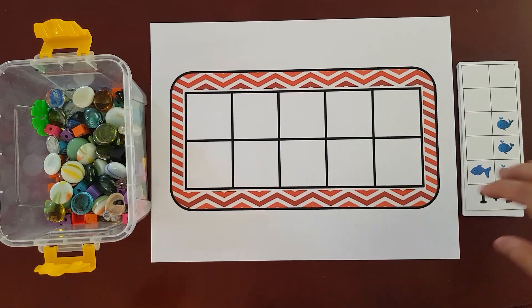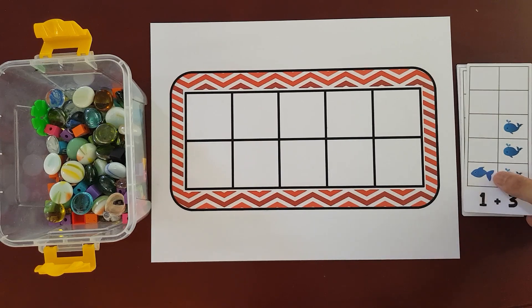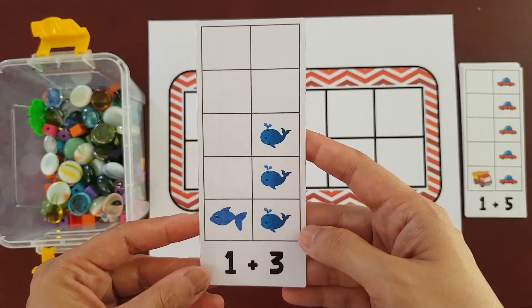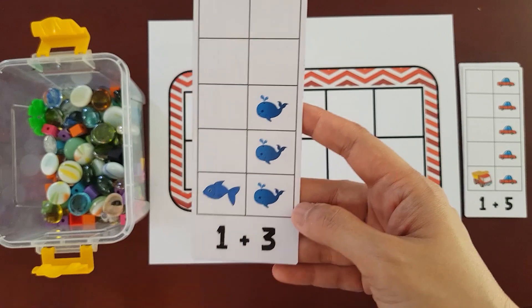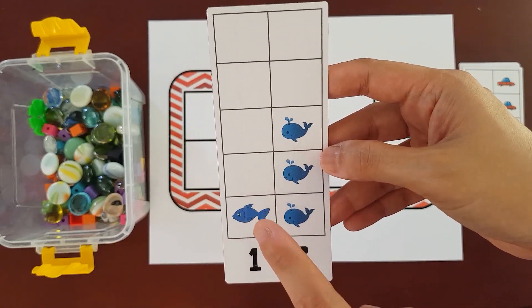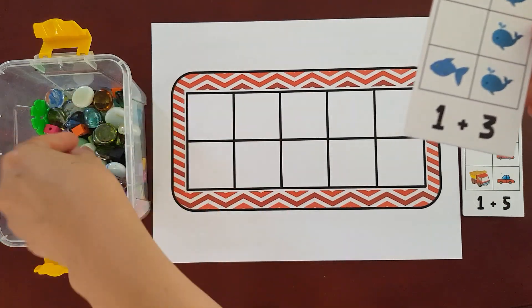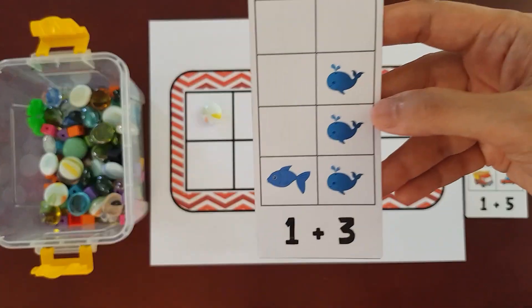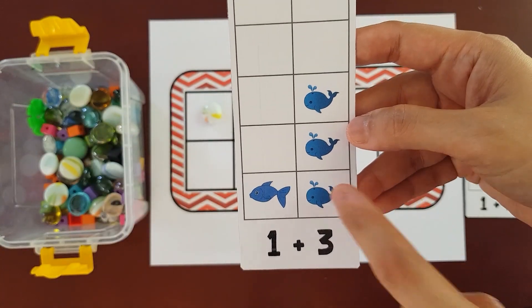Here are the steps. So I'll just get a card here. So it says here, 1 plus 3. And then I'm gonna put 1 counter on top of the frame. So 1. And then I will put 1, 2, 3 on the bottom frame.